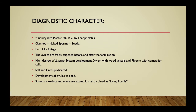Gymnosperm leaves are fern-like, also known as fern-like foliage. The ovules are freely exposed before and after fertilization — since ovules are naked, when transformed into seeds they also remain naked. A high degree of vascular system development is present, with xylem containing wood vessels and phloem containing companion cells.